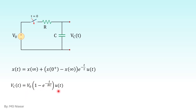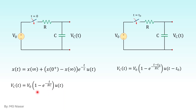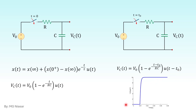Multiplied by u(t), which means for time before zero there is no voltage, and after time equal to zero the voltage follows this equation. Sometimes we want to switch on at a different time — t equals T0. In that case in the equation we replace t with (t - T0) and multiply by u(t - T0), which means up to that point the voltage is zero, and then it follows this equation.